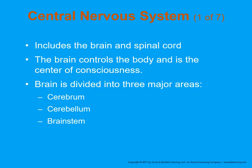The central nervous system includes the brain and spinal cord. The brain, which controls the body, is the center of our consciousness and the supercomputer that makes us who we are. It's divided into three main components: the cerebrum, the cerebellum, and the brain stem.